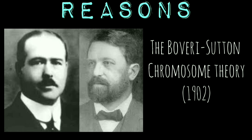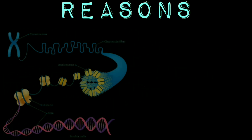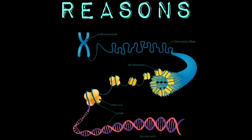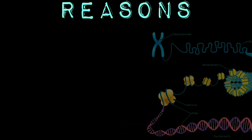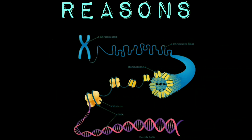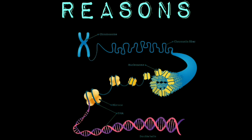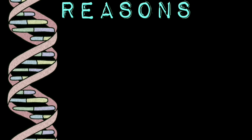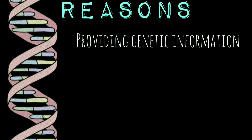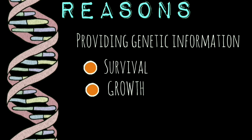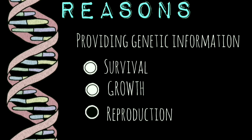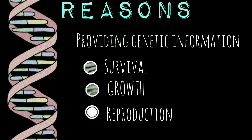It is universally accepted that DNA is the genetic material, and that in eukaryotes almost all the DNA is present in chromosomes. Thus the most important function of chromosomes is to provide the genetic information for various cellular functions essential for survival, growth, development, and reproduction of organisms.